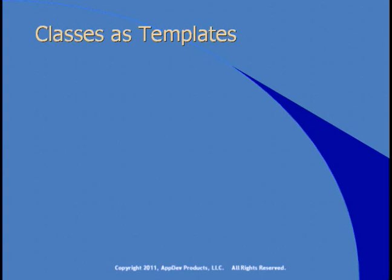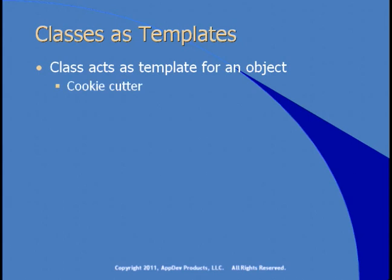So what actually is a class? A class acts as a template for an object. There are many different ways to describe this, but here's how I think about it. A class is like a cookie cutter — you don't eat the cookie cutter, you just use it to create cookies. A class is like that; it acts as a template for an object, and an object represents the cookie.